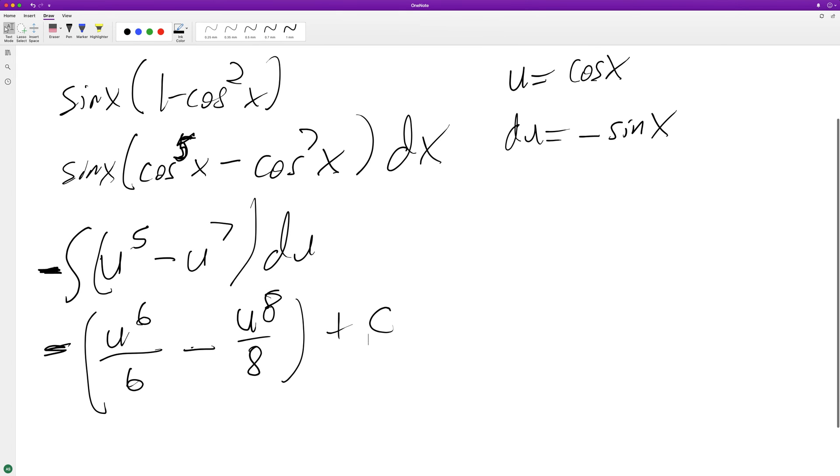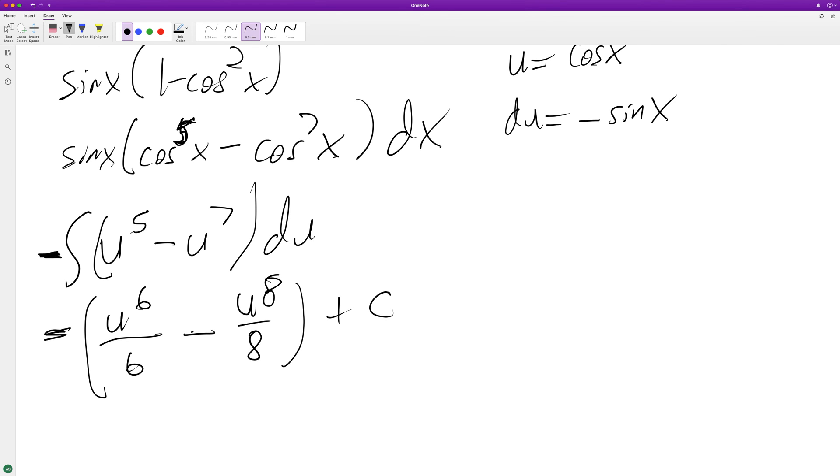Maybe we can distribute that minus sign. We'll distribute the minus sign and then we'll substitute back in. So we end up with cosine raised to the eighth over eight minus cosine to the sixth over six plus c.